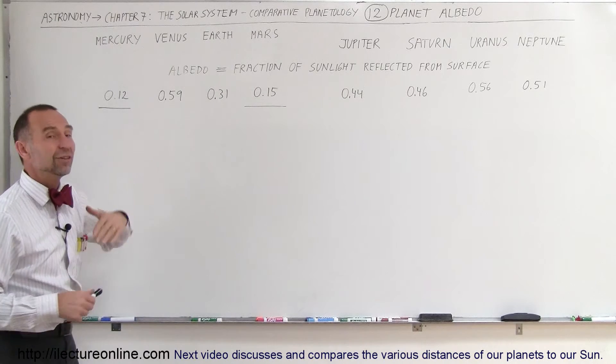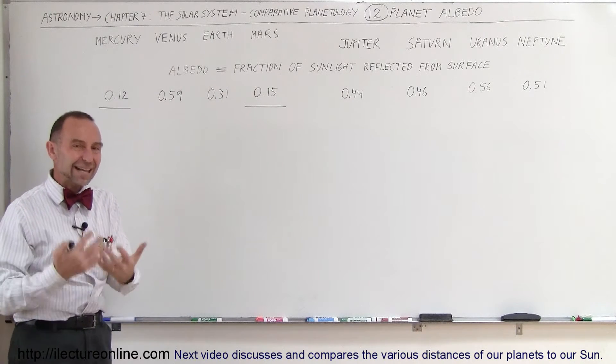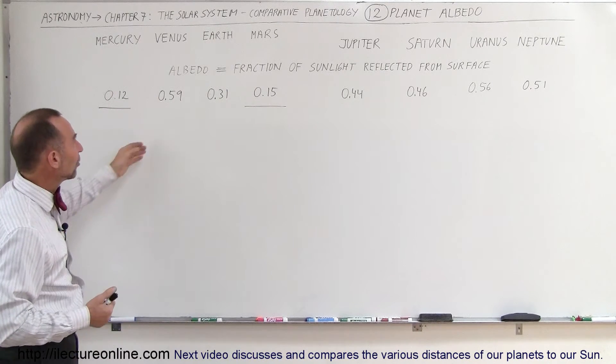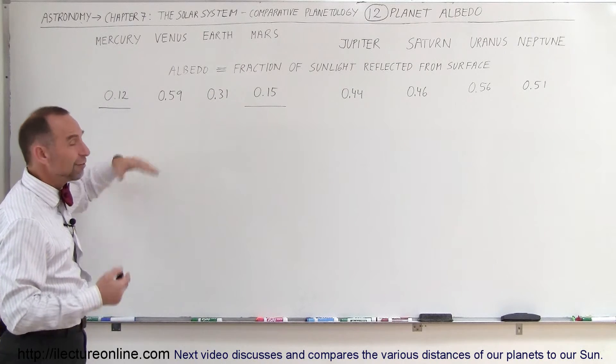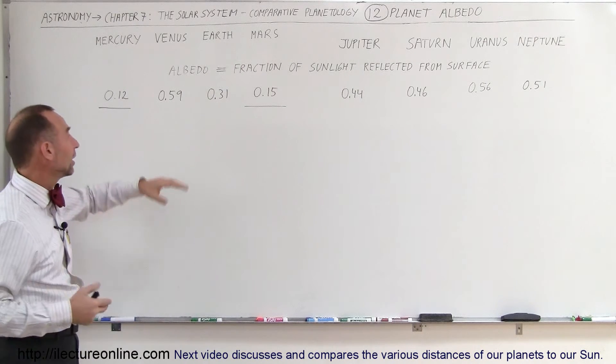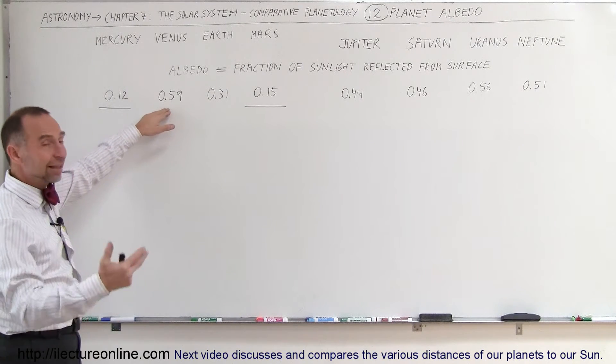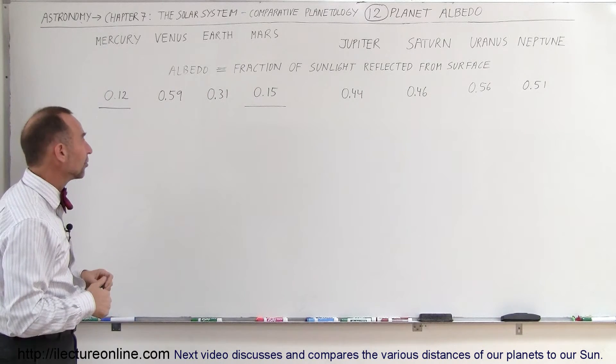Well, the atmosphere of Venus is enormously dense. It's 90 times the atmosphere density on the Earth, and therefore, Venus reflects majority. 59% of all the light that is incoming on Venus gets reflected back out into space.